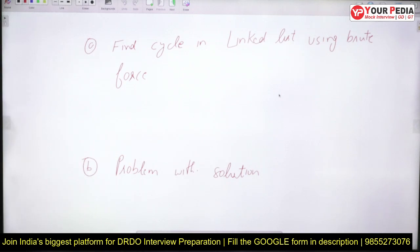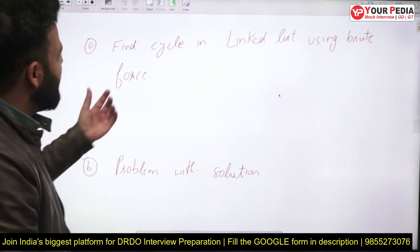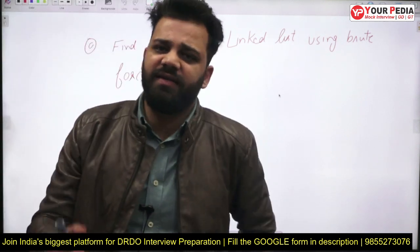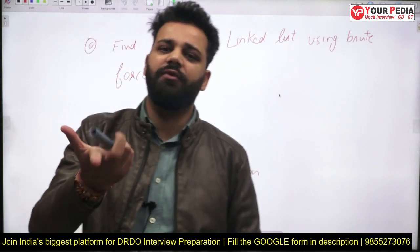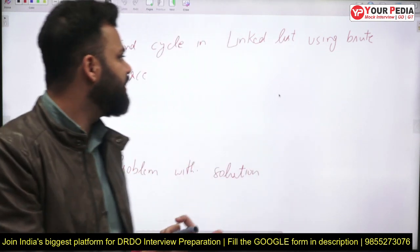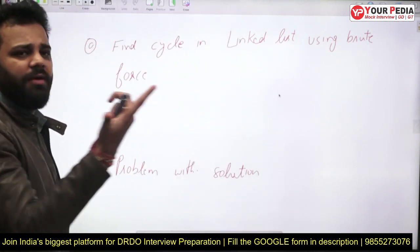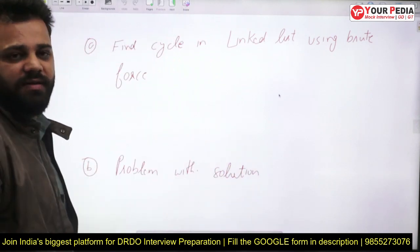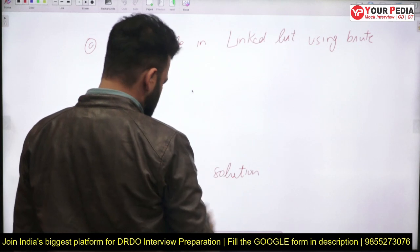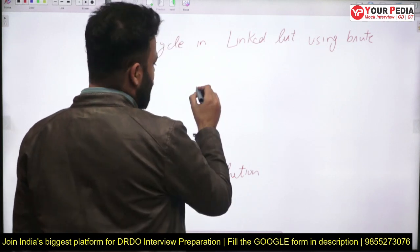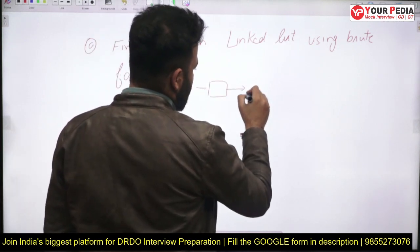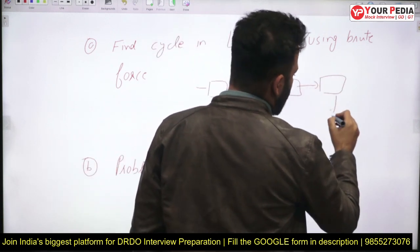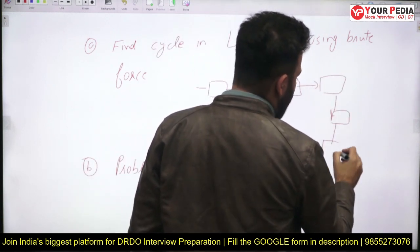The first question is: find a cycle in a linked list using brute force. It's a very basic question — no specific algorithm required, just apply brute force to determine whether the linked list has a cycle. Brute force means hit and trial — you do anything to solve the question without a proper approach.